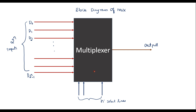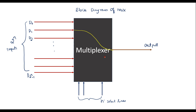In a multiplexer, depending on the select lines, any one of the input lines is selected. If the select line is 0 0 0, then the data d0 will be selected and connected to the output line — whatever data is present at d0 will be passed to the output. Similarly, if the select line is 0 0 1, then the D1 line is selected and D1 will be connected to the output. So at any time, one of the input lines is connected to the output line.